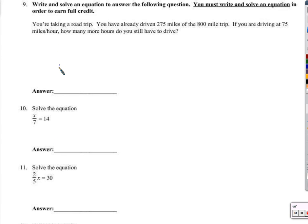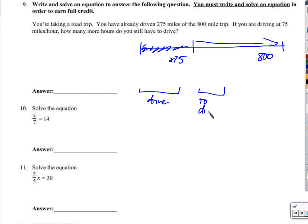Okay. A little word problem for you. So we're taking a road trip. Okay. We're in a car. You've already driven 275 of the 800 miles. So if I picture this, I can imagine there's a total of 800 miles to drive from beginning to end. And I've already driven 275 miles. Right? Okay. And we have the rest to go. If you're driving at 75 miles an hour, how many more hours do you still have to drive? There's all sorts of equations that we could write depending on how our brains think. I'm thinking the amount I've driven and the amount left to drive should equal the total distance of the trip.